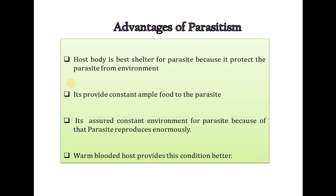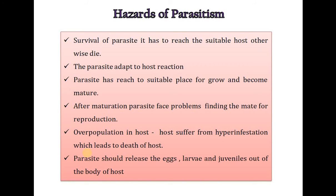The host body is the best shelter for the parasite because it protects the parasite from the environment. It provides constant, ample food to the parasite and assures a constant environment, so the parasite reproduces enormously — warm-blooded hosts provide this condition better. What are the hazards of parasitism? For survival, the parasite must reach a suitable host, otherwise it will perish. The parasite also has to adapt to the host reaction.